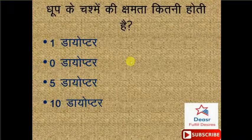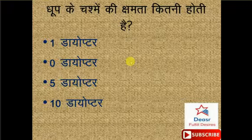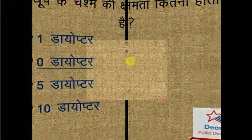Dhoop ke chashme ki kshamta kitni hoti hai? Options hain hamare paas: one diopter, zero diopter, five diopter, ten diopter. Doston, dhoop ke chashme ki jo kshamta hoti hai, woh zero diopter hoti hai - option number B yahan pe correct hai.